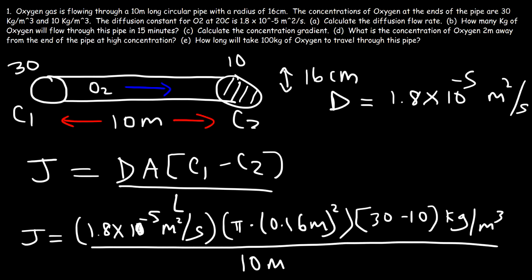Now let's check the units. The cubic meters from the concentration cancel the square meters from the area and diffusion constant, leaving one meter unit that cancels with the meters in the denominator. So the resulting units for the diffusion flow rate in this example are kilograms per second.